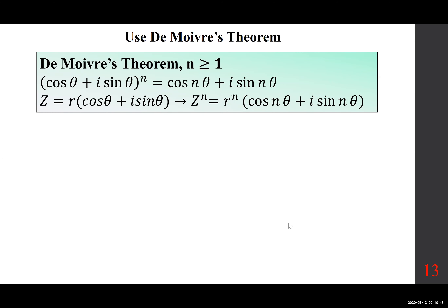We are going to look at more examples and mention De Moivre's theorem — look at what happens when you want to raise a complex number to a power when it's given in polar format. Basically you multiply theta by n. If you happen to have an R in front, you have to raise that to the power of n as well. Here's a very simple example.